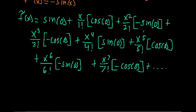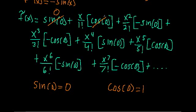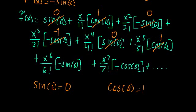Now let's see what happens when we plug in the actual values. We know that sine of zero equals zero, and cosine of zero equals one. So plugging in: sine of zero is zero, cosine of zero makes that term one, negative sine of zero is still zero, negative cosine of zero gives negative one, then zero, then one, then zero, then negative one — and it repeats.